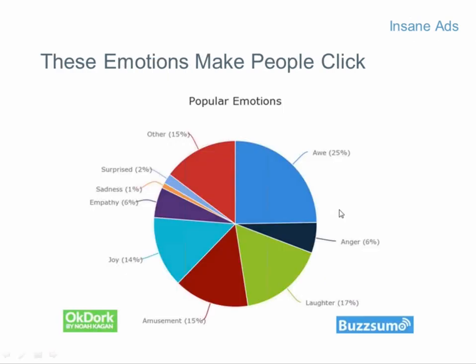Everyone is doing the same thing. Think about sites like Upworthy and CNN with their crazy headlines that make you want to click. Emotions like awe, anger, laughter, joy, and amusement make people click on ads, yet nobody is using that in their ad copy. We'd be wise to emulate what content marketers do — write clever headlines that stir emotion. Just don't write the same ad as everyone else.